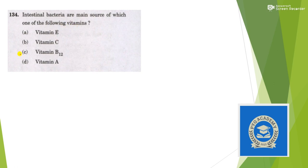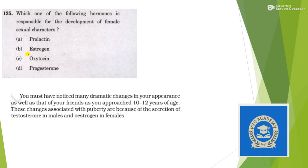Next: intestinal bacteria are the main source of which one of the following vitamins? Again a factual question — answer is option C, Vitamin B12. Next: which one of the following hormones is responsible for the development of female sexual characters? As stated in NCERT, changes associated with puberty are because of secretion of testosterone in males and oestrogen in females. So the answer should be oestrogen.